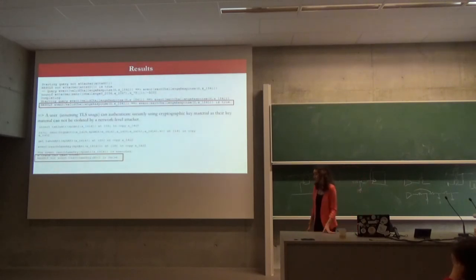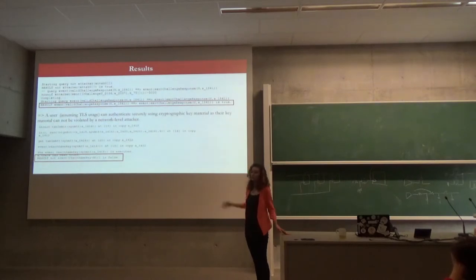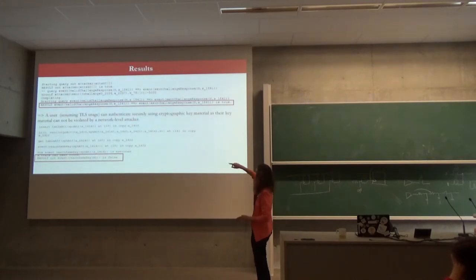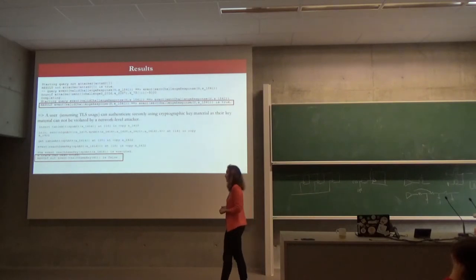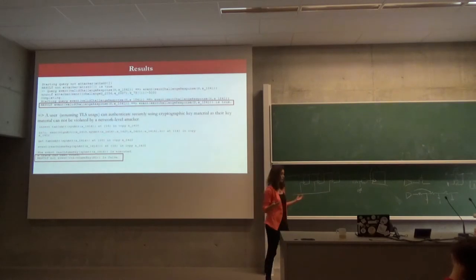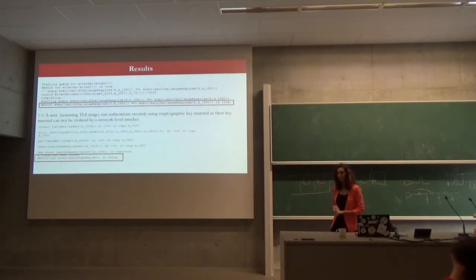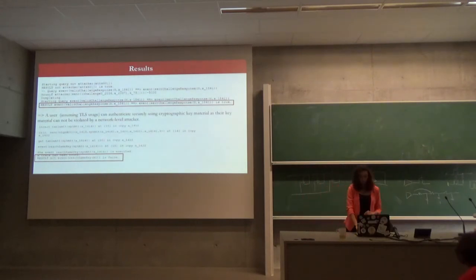These are the results of running our model in ProVerif. For integrity, we can see the attacker cannot read any of the messages because we use encryption. For authentication, the result shows the event triggered correctly — which is true — meaning authentication holds in all phases of the protocol. However, for privacy, the result is false. In this case, a malicious server — or one that is honest but curious — will save a lot of information about the authenticator in the first phase, and will actually know that you're using the same authenticator, meaning you are the same user behind two different accounts.